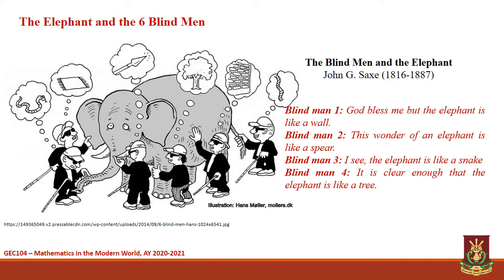The fifth, who by chance touched the ear, said that the elephant is like a fan. Lastly, the sixth blind man grabbed the swinging tail and said that the elephant is like a rope.